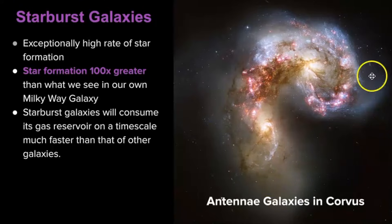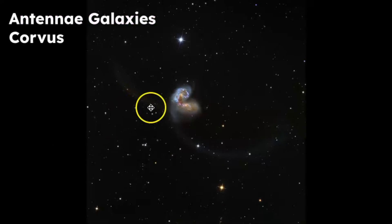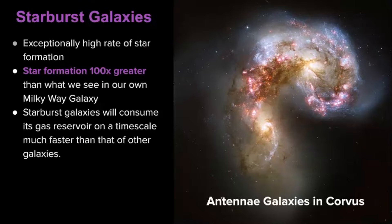Here's an example of one. These are the Antennae galaxies in the constellation of Corvus. If we were to zoom out there, you could see that's what looks like an antenna, maybe perhaps on a bug. These two galaxies are interacting with each other, and because they are interacting and merging together, there is a higher rate of star formation.